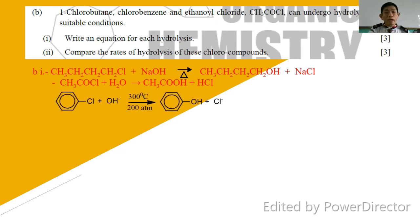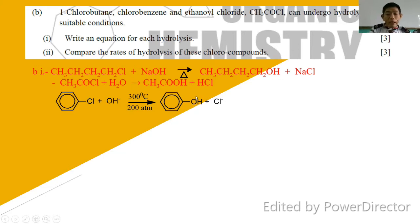Whereas for chlorobenzene, you require high temperature and high pressure. You don't need to specifically state 300°C and 200°C — just state high temperature and high pressure. The product formed is phenoxide ion O⁻ plus HCl. The final product is phenol.